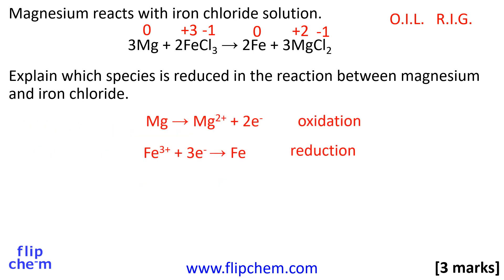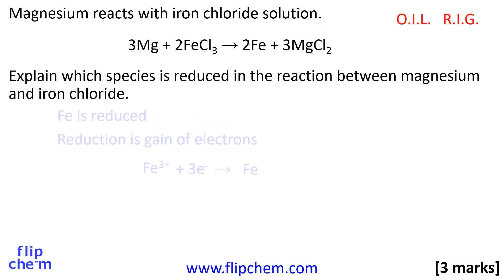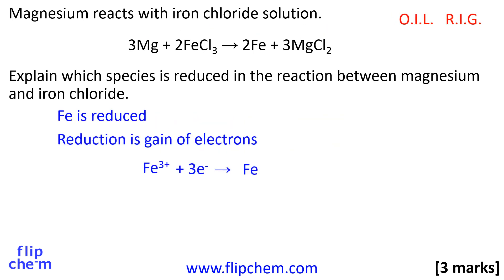I have shown the half equations here. The magnesium has lost electrons and is oxidized. The iron has gained electrons and is reduced. So, to address the question: Fe is reduced. Reduction is the gain of electrons — Fe³⁺ + 3e⁻ → Fe.